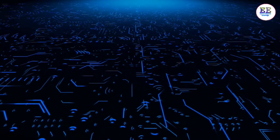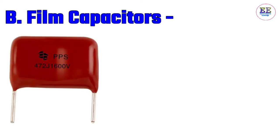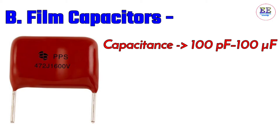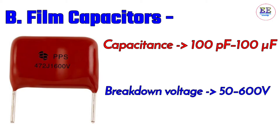B) Film capacitors: film capacitors are constructed much like paper capacitors, except that the paper is replaced with a plastic film such as polystyrene, polycarbonate, or polyethylene. There are two main types of film capacitors: the poly type and the metallized type. Their capacitance value is 100 picofarad to 200 microfarad, and the breakdown voltage is 50 to 600 volts.